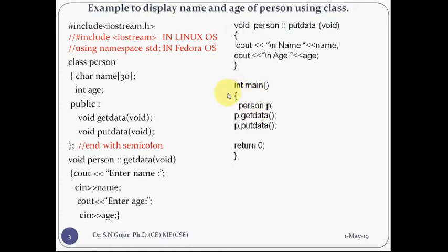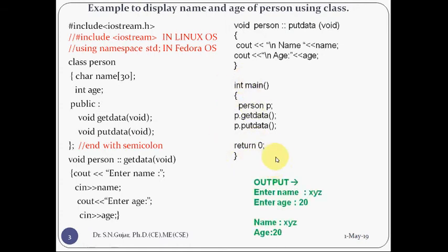Now write the main function using integer data type. 'Person' is my class name and small 'p' is the object. From this object I am going to call all functions. p.getdata reads the data and p.putdata prints the data. Return 0 completes the main function. Once compiled and executed, entering name 'xyz' and age '20' will print name xyz and age 20. This example shows how to use the scope resolution operator with a class.